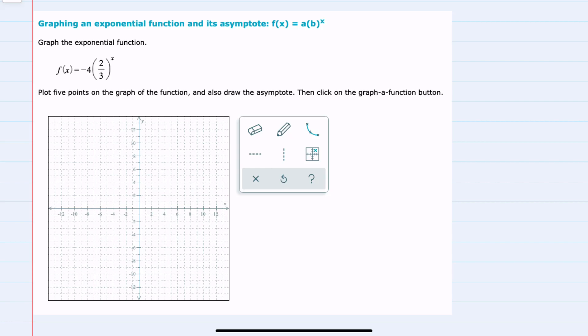In this video, I'll be helping you with the Alex problem type called graphing an exponential function and its asymptote, f of x equals a times b to the x.